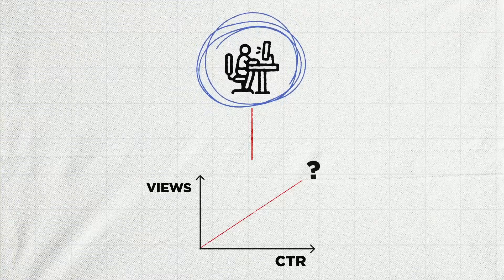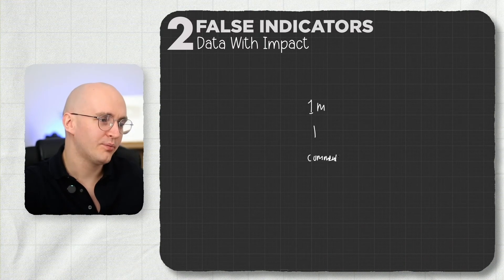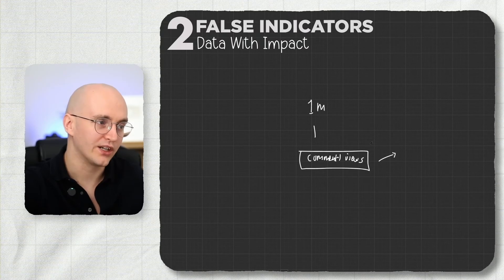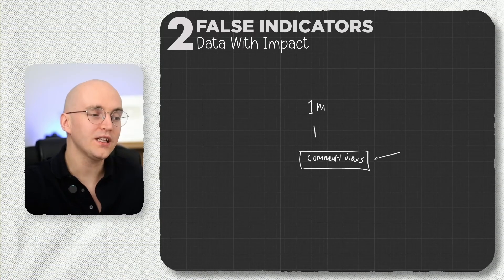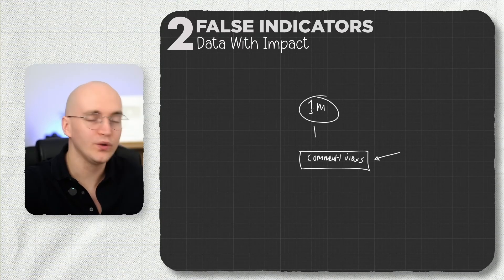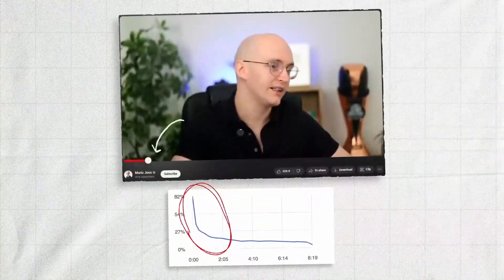The next thing: stop looking for useless metrics. Sometimes you'll hear people come up with crazy metrics like your comment-to-view ratio. The problem is, does a higher comment-to-view ratio lead to more views? We want to know that, because don't focus on metrics unless you can truly connect them to your success metric. I've heard metrics like retention percentage after 30 seconds — people say that needs to be as high as possible, which is not true. We looked into it and often found no correlation at all.